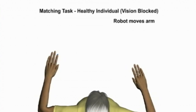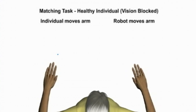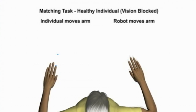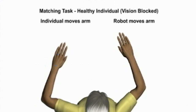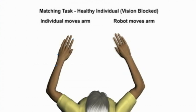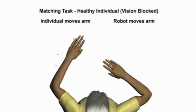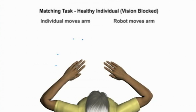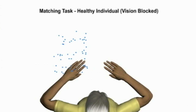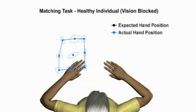In this task, the robot moves the right arm. The individual is required to move their left arm to the mirror position without being able to see their arms. The ellipses show that the healthy individual is able to accurately match the mirror position of their right arm, and they do this on a consistent basis across repeated trials.